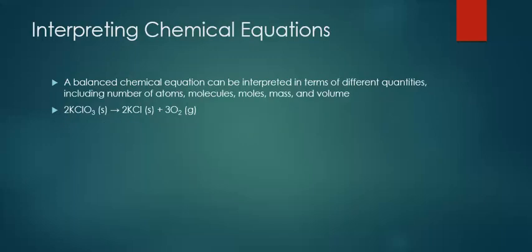When you look at a balanced chemical equation, it can be interpreted in terms of atoms, molecules, moles, mass, or volume. We're going to look at this example equation — the decomposition of potassium chlorate into potassium chloride plus oxygen. Notice it is balanced; we have to have all equations balanced before we interpret them.